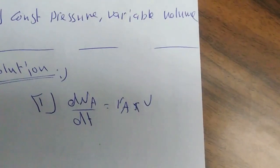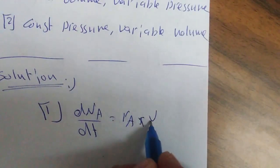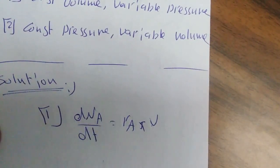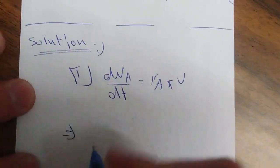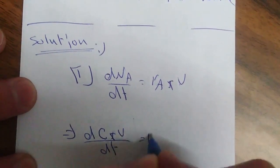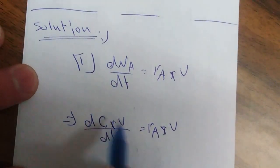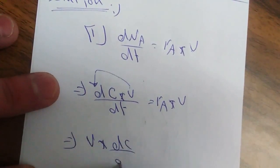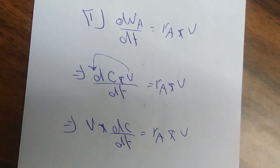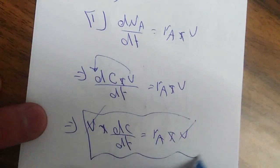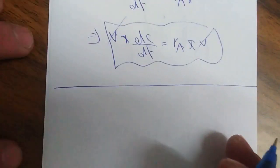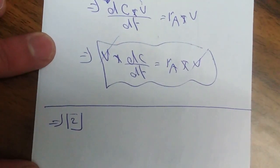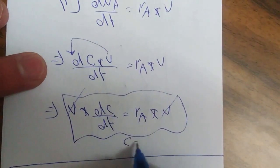الحالة الأولى: constant volume وVariable Pressure. بطبق Design Equation اللي هي dN_A/dT = r_A times Volume. بما أن N_A = C_A times V والـ Volume constant، فرح تصير: V × dC_A/dT = r_A × V. وبقدر أقسم على الـ Volume فبتصير dC_A/dT = r_A.